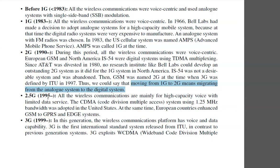Around 1995, in the 2.5G era, wireless communications were mainly for high-capacity voice with limited data service. The CDMA code division multiple access system using 1.25 MHz bandwidth was adopted in the United States. At the same time, European countries enhanced GSM to GPRS and EDGE systems.